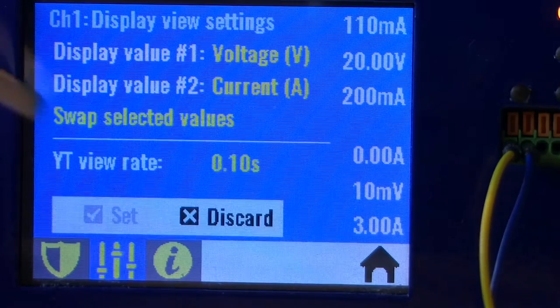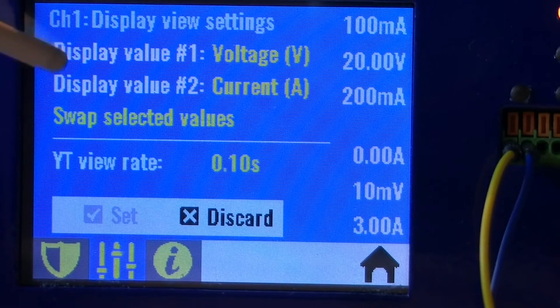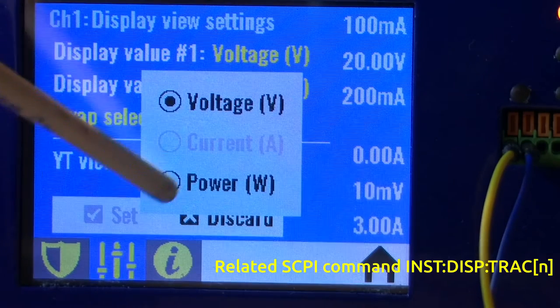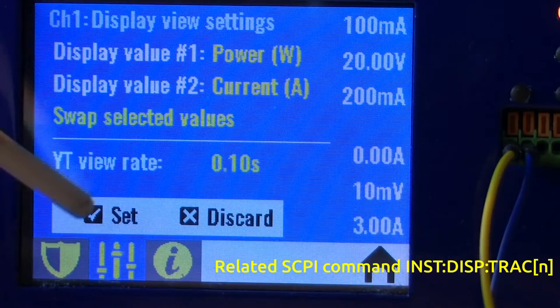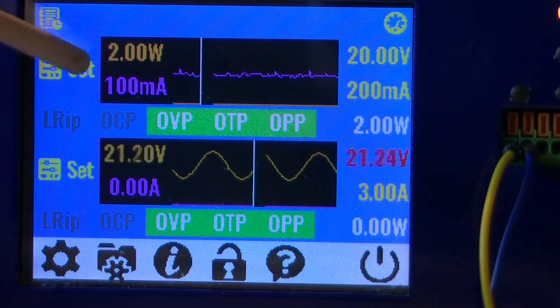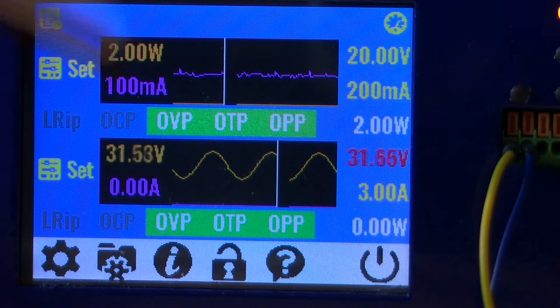Something else what is possible now and what is added with this new feature is in display view that we can define display value for that trace or that bar graph here. For this instance I can put power instead of voltage, and now we can see what is the output power.